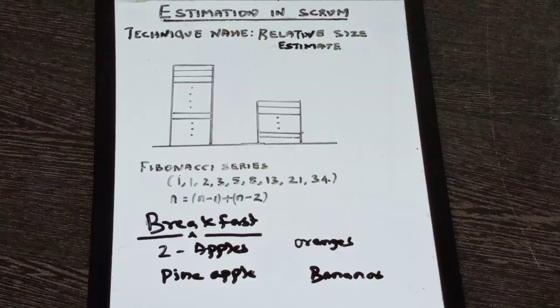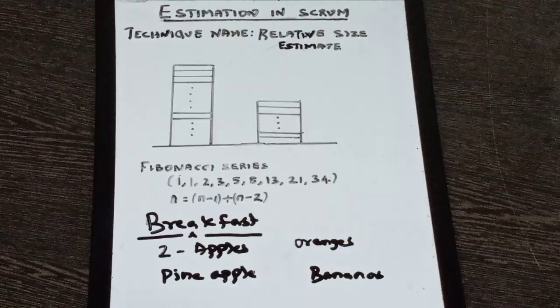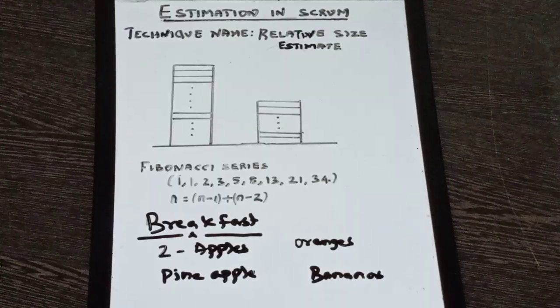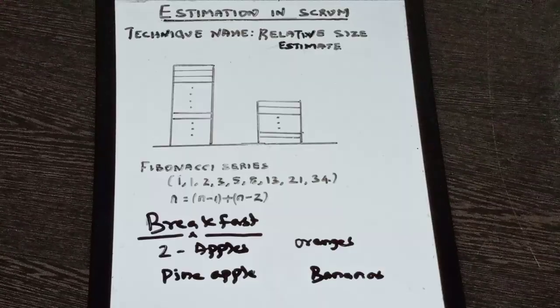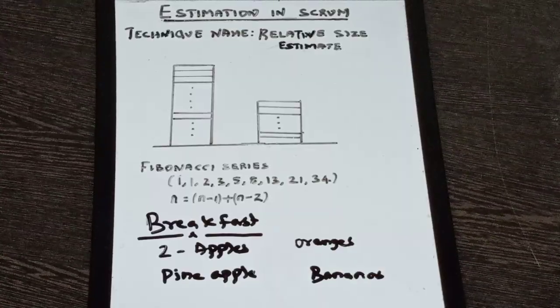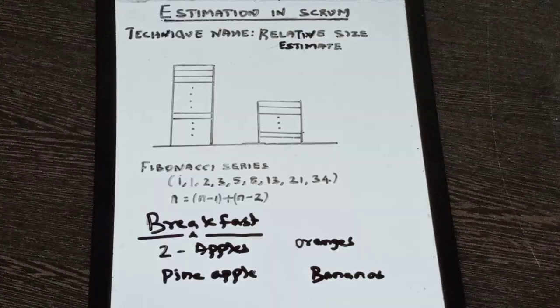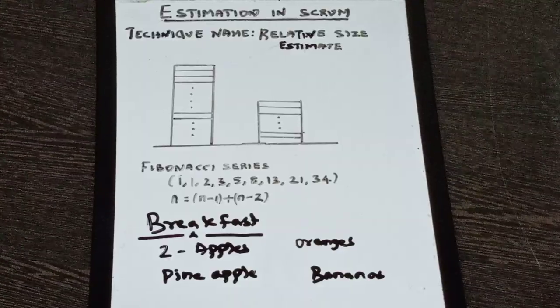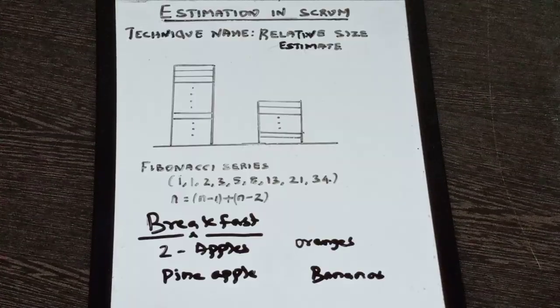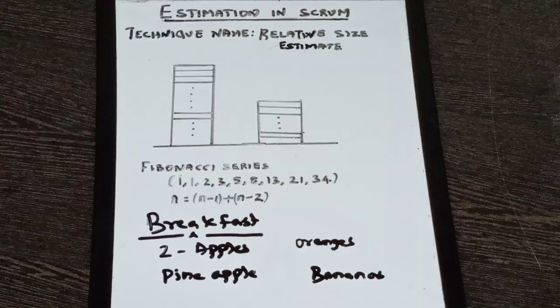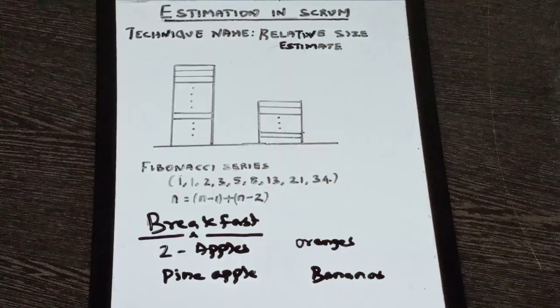Okay guys, so how we do estimation in Scrum? If you recall in traditional project management, we all know that size-based estimation gives us a very accurate estimation compared to expert judgment or using analogous or COCOMO model. And in traditional project management we use size-based estimates like kilo lines of code, function points, feature points, etc. But the problem with those methods is we will know the size only after we implement the code. So it is no longer estimation, it is actually the actual data.